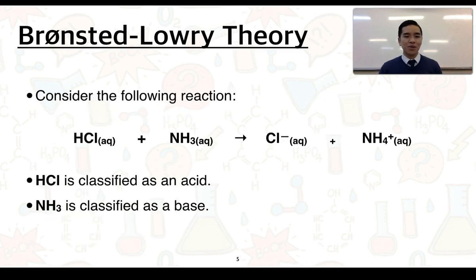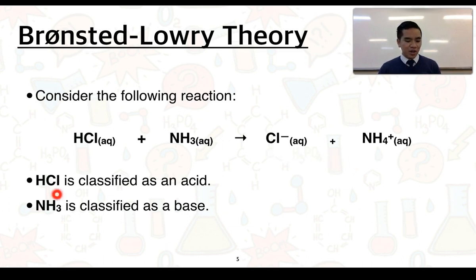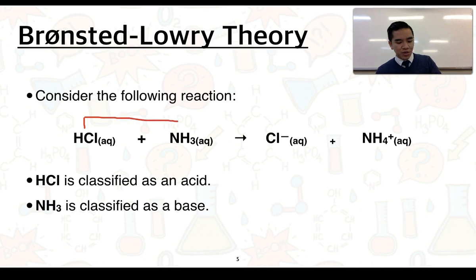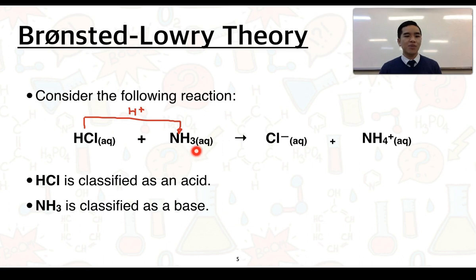Consider this reaction: HCl (hydrochloric acid) reacting with NH₃ (ammonia) in solution to form two products. HCl is our acid and NH₃ is our base. Because acids are proton donors, HCl donates a proton to NH₃, leaving a chloride ion (Cl⁻). Ammonia gains that proton, going from NH₃ to NH₄⁺, confirming it has acted as a base.